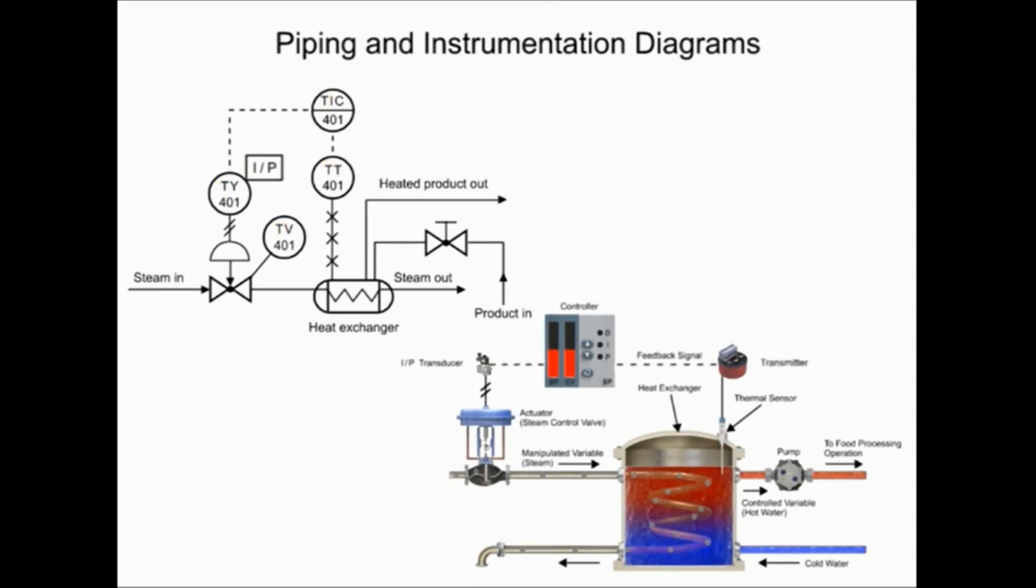The instrument connected to the heat exchanger contains two other types of information. The second letter in the functional identifier indicates it is a transmitter, and the balloon with no line inside its symbol indicates the device is field mounted.